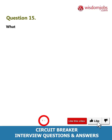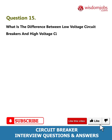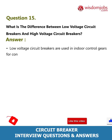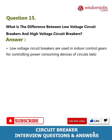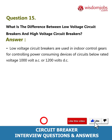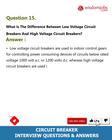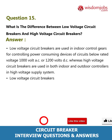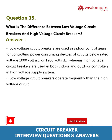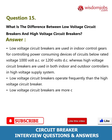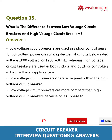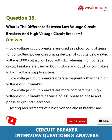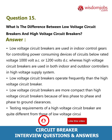Question 15: What is the difference between low voltage circuit breakers and high voltage circuit breakers? Answer: Low voltage circuit breakers are used in indoor control gears for controlling power consuming devices in circuits below rated voltage 1000V AC or 1200V DC, whereas high voltage circuit breakers are used in both indoor and outdoor installations in high voltage supply systems. Low voltage circuit breakers operate more frequently than high voltage circuit breakers, are more compact due to less phase-to-phase and phase-to-ground clearances, and have different testing requirements.